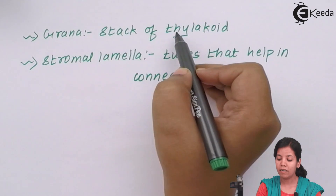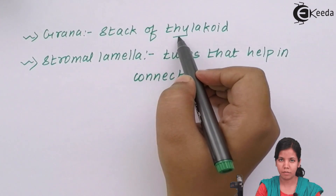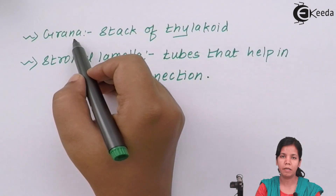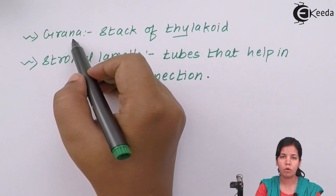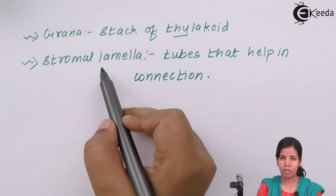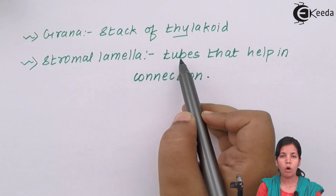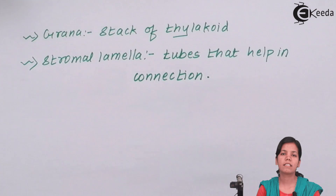Grana is basically a stack of thylakoids. From the bunch of thylakoids, when you remove a particular sub-segment, that is called grana. Grana is the place where photosynthetic pigments — chlorophyll A, B, various kinds of carotenoids, and xanthophyll — are present, and where the process of photosynthesis takes place. The stromal lamellum is a tube that helps in the connection of two different structures such as grana and thylakoid.